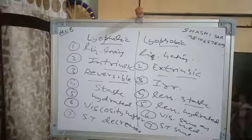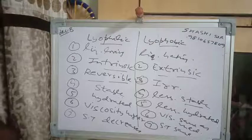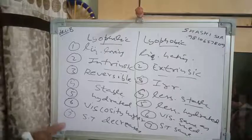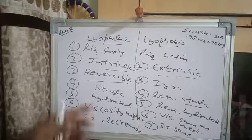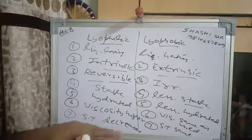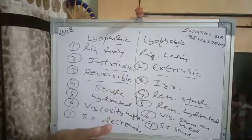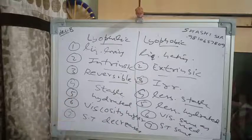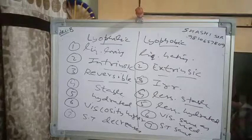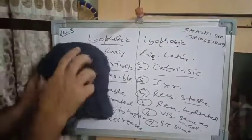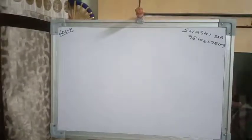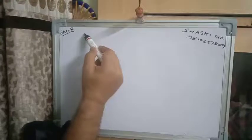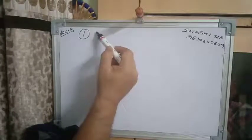Next we will study the methods of preparation of lyophobic sols. Lyophilic sols are simply prepared by mixing — for example, gum or gelatin mixed in the dispersion medium directly forms the sol. But lyophobic sols require special indirect methods. There are two main categories: dispersion methods and condensation methods. First is the dispersion method.